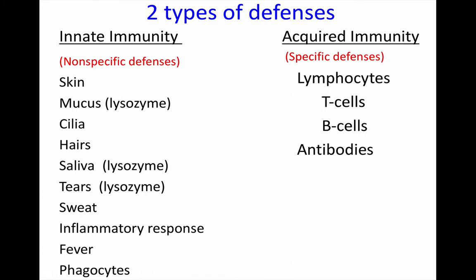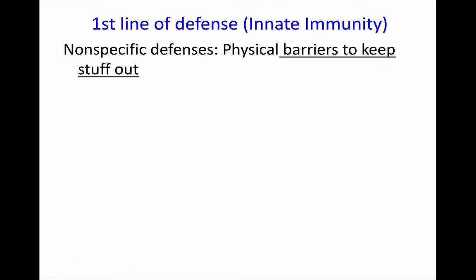Keeping that in mind — innate immunity with nonspecific defenses, and acquired immunity specific against certain bacteria and viruses — let's look at the three lines of defense. The first line of defense is all about keeping stuff out of your body. If these foreign invaders, these bacteria and viruses, can't get into your body, then they can't hurt you. So your first line of defense is designed to either keep them out or keep them from getting to your cells.